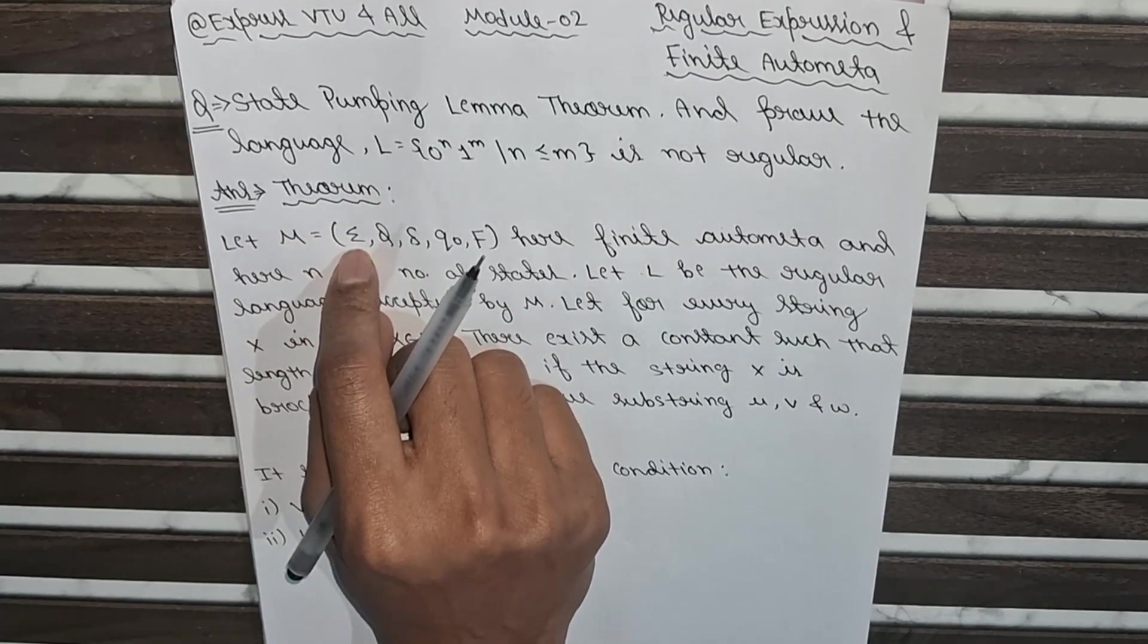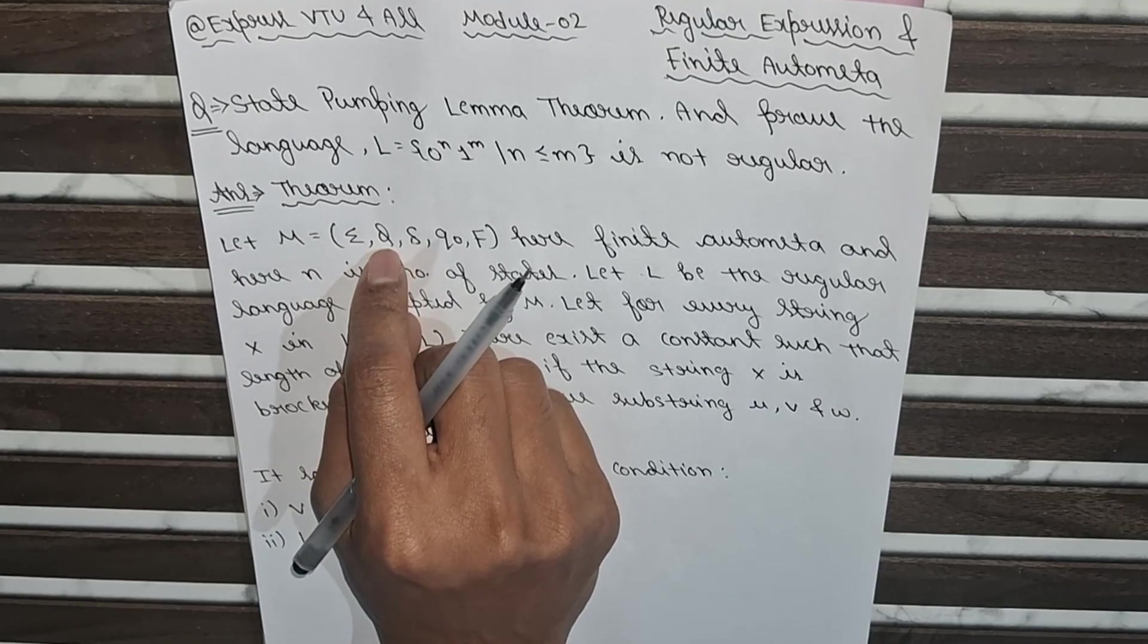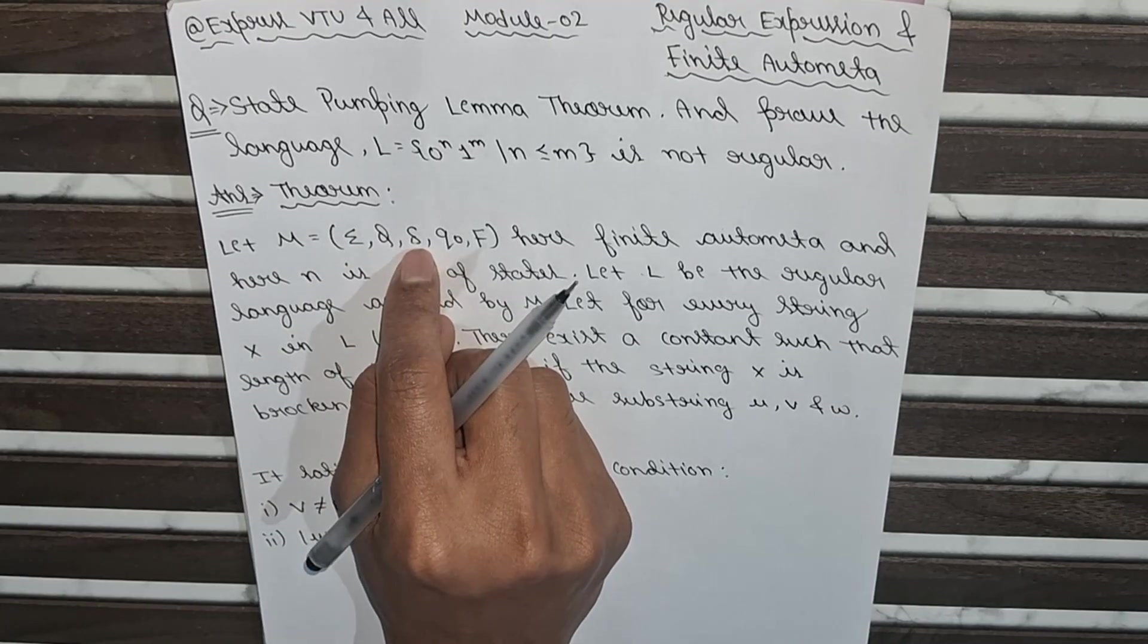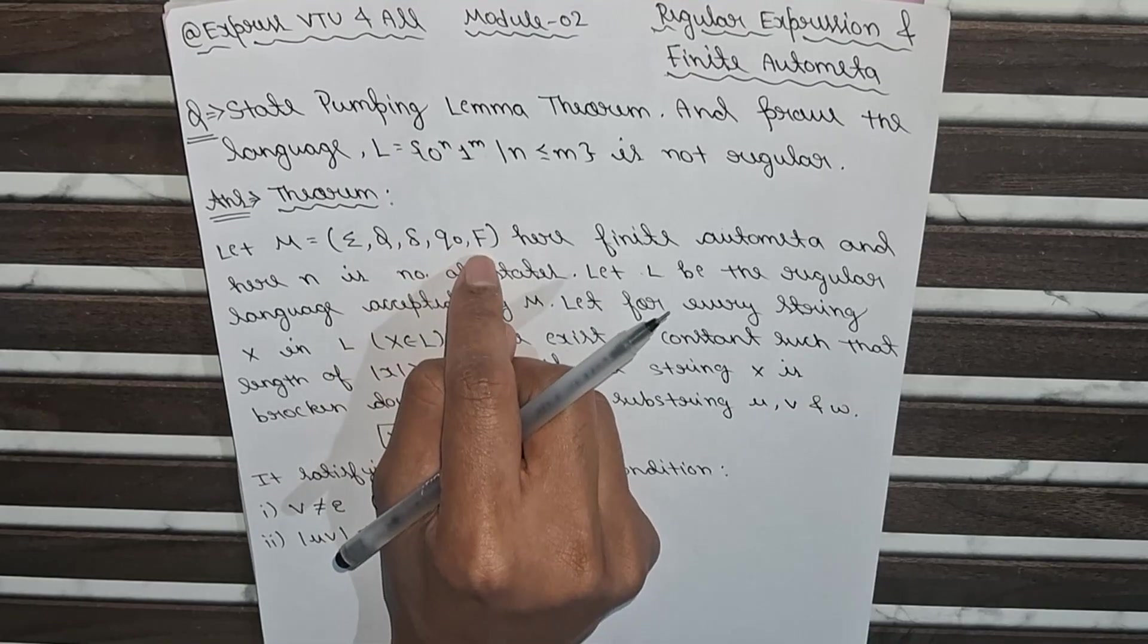Let M equals sigma, sigma defined as an alphabet, Q is the set of states, delta is the transition function, and q0 is the starting state and F is the final state.